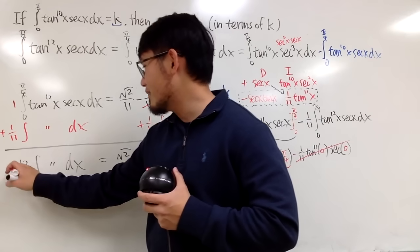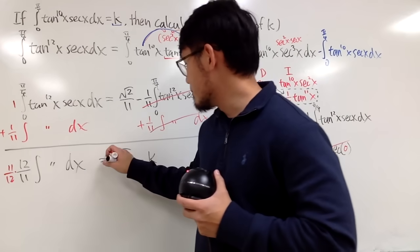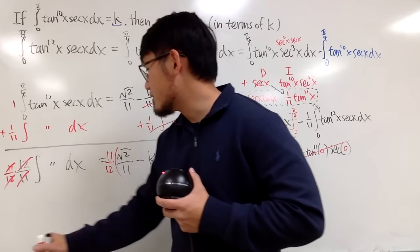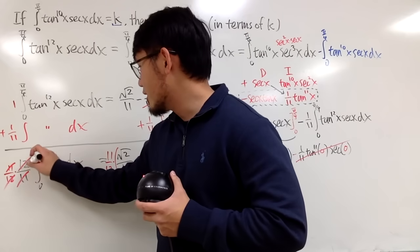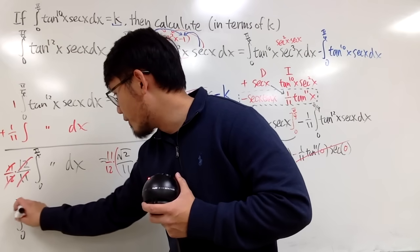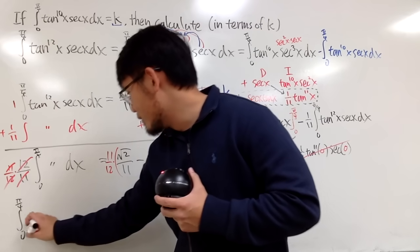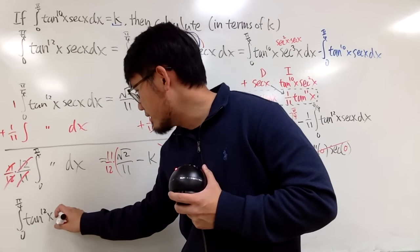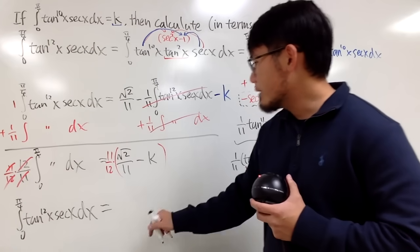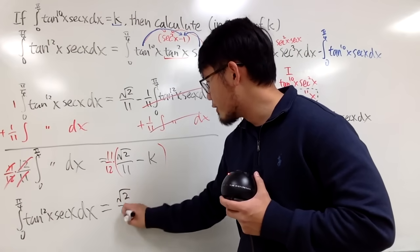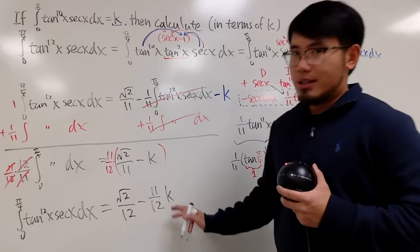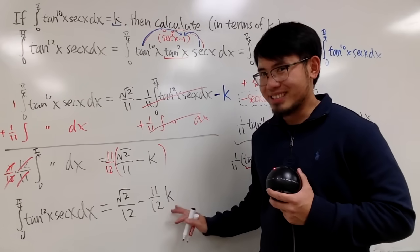To get rid of the 12 over 11, we have to multiply 11 over 12. So we add 1 over 11 of this integral to both sides, so this and that cancel. You end up with 12 over 11 times the integral, which equals square root of 2 over 11 minus k. Multiplying both sides by 11 over 12, the 12 over 11 and 11 over 12 cancel. So the integral from 0 to pi over 4 of tangent to the 12th power of x times secant of x dx equals square root of 2 over 12 minus 11 over 12 times k. Question for you guys: do we need to put plus C right here?